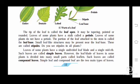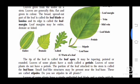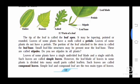Leaves of some plants have a single undivided leaf blade and a single mid-vein. Such leaves are called simple leaves - where the flat surface is undivided and only a single mid-vein passes through the middle, as shown in figure 2.7. However, the leaf blade of leaves in some plants is divided into many small parts called leaflets. Such leaves are called compound leaves. Simple leaf and compound leaf are the two main types of leaves.